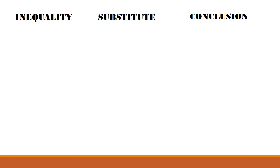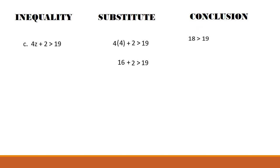For the inequality, we have 4z + 2 > 19. Substitute z = 4: 4(4) + 2 = 16 + 2 = 18. Since 18 is not greater than 19, this is false. Therefore, 4 is not a solution.